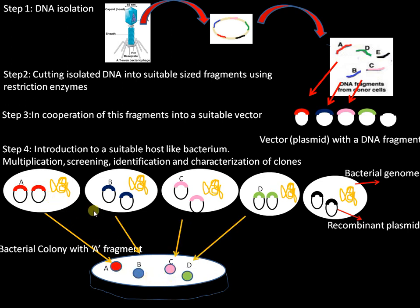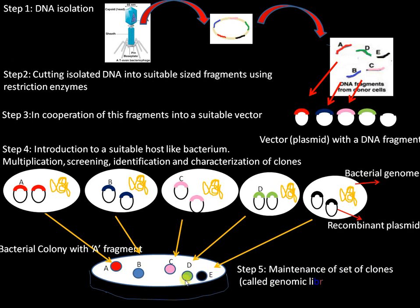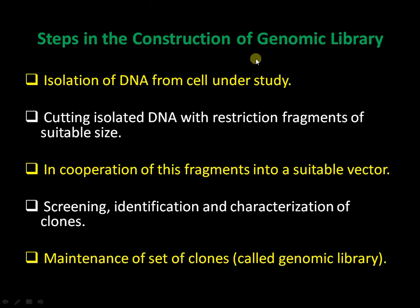In the petri plate, colonies are formed from all these fragments. Colony A contains fragment A, colony B contains fragment B, and so on for C, D, and E. This plate represents the genomic library of that phage — all five fragments of the phage are present across the colonies. The maintenance of this set of clones is called a genomic library.